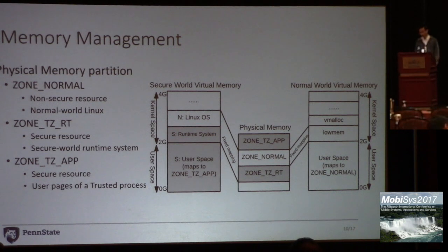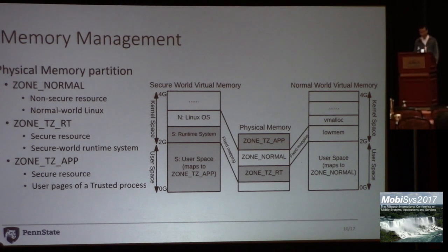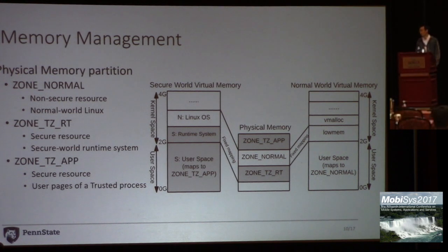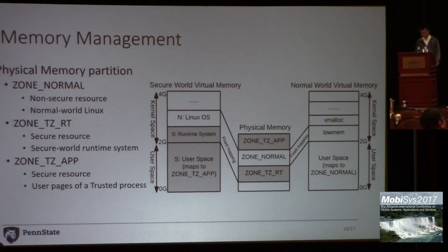Memory management is a very important aspect in implementing TrustShadow. We partition the physical memory into three regions. First, we have a normal region, which is a non-secure resource that holds the Linux kernel. Second, we have a TrustZone runtime region, which is a secure resource that holds our runtime system. Finally, we have a TrustZone app region, which is a secure resource but is managed by the normal world Linux kernel. The Linux kernel runs its existing memory management system to allocate secure pages for trusted applications. In this way, our runtime system does not have to run sophisticated memory management; it only needs to verify the secure pages allocated by the Linux kernel.